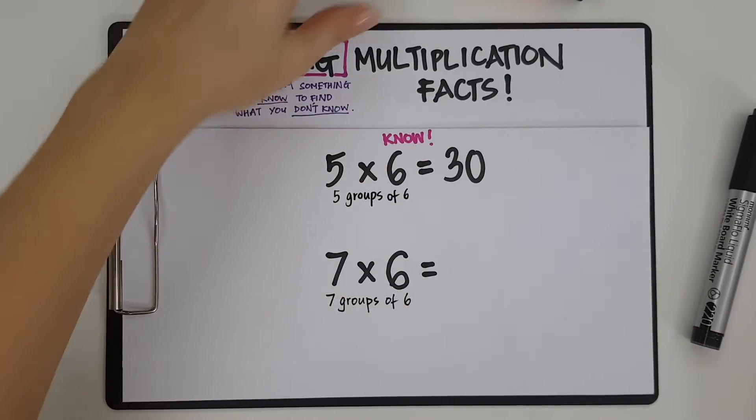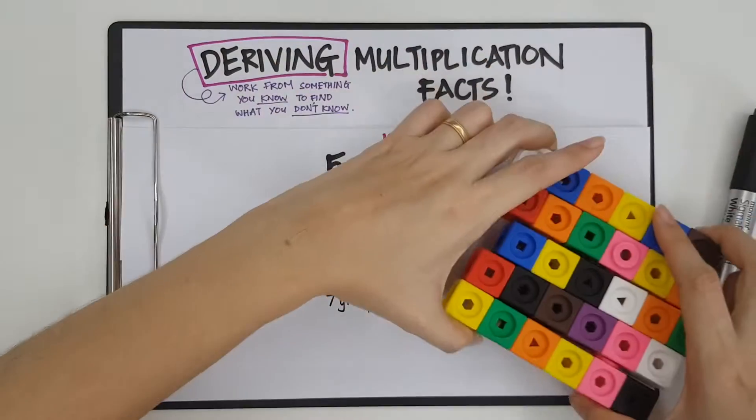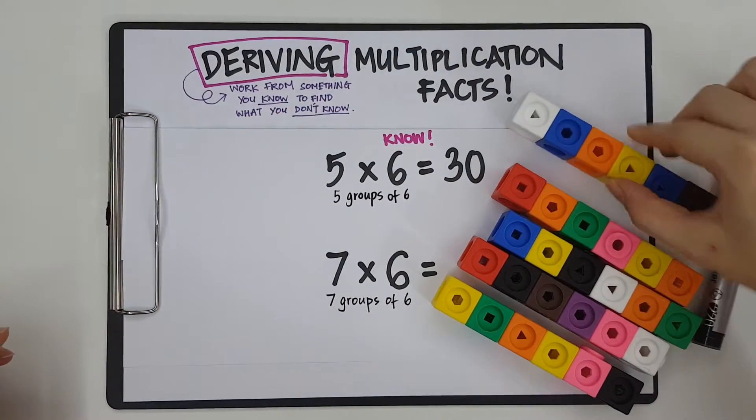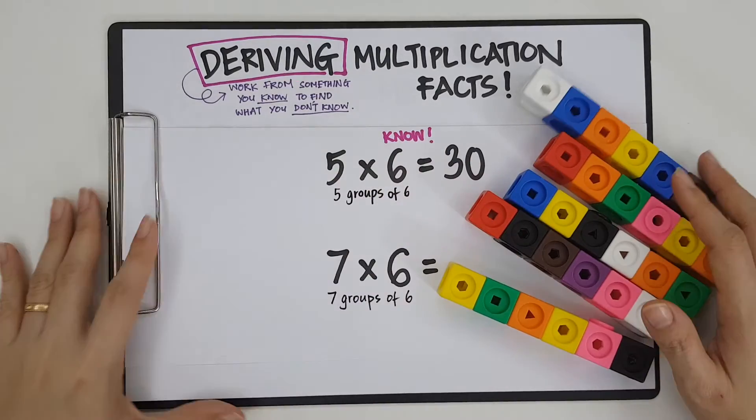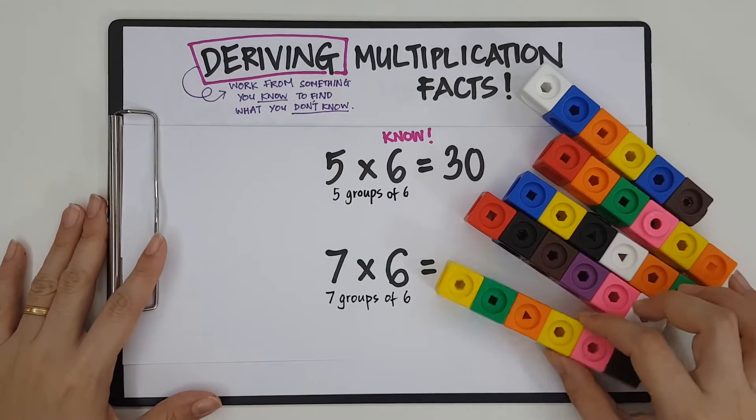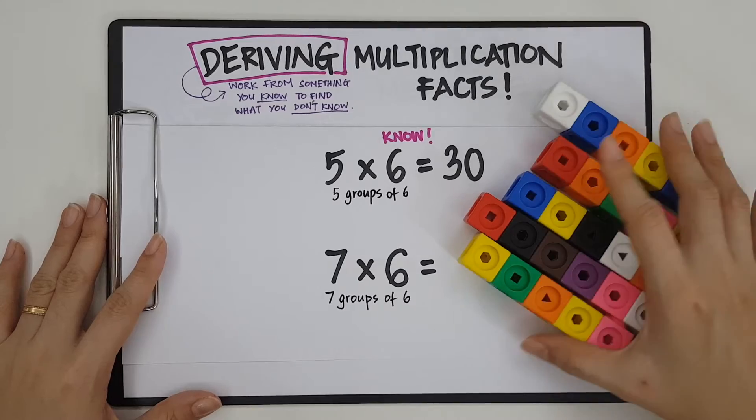Okay? So let me show you 5 groups of 6. It looks like this. 5 groups: 1, 2, 3, 4, 5. And each group has 6. Okay? These are equal groups. 5 groups of 6.